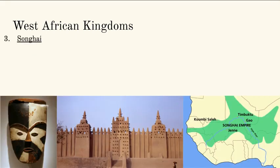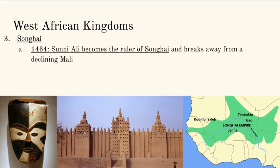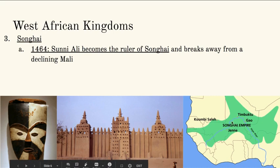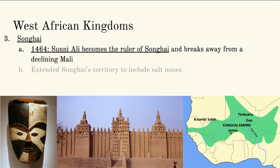The final West African kingdom we focus on in world history is the Songhai Empire. In around 1464, Songhai is going to become its own empire. It originally was an area of Mali, but Sunny Ali became the ruler of Songhai in 1464. You'll notice it's kind of south of the Mali Empire but still has bits of it — Mali would be about here, Ghana would be about here, and then the Songhai Empire is just replacing both of those. The ruler basically extends the territory to include more of the salt mines.